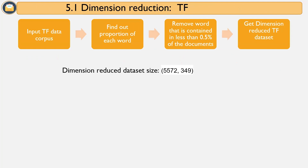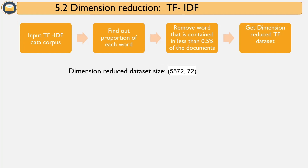Since the corpus size is quite large, dimension reduction becomes an important step. We used two approaches: PCA (principal component analysis) and a heuristic approach. For TF and TF-IDF, we used the heuristic approach — dropping text that appears in less than 0.5% of documents. After dimension reduction, the TF dataset has 5,572 rows and 349 columns, and the TF-IDF dataset has 5,572 rows and 72 columns.